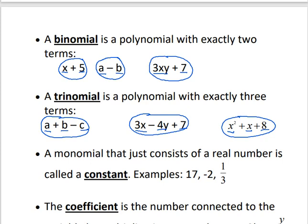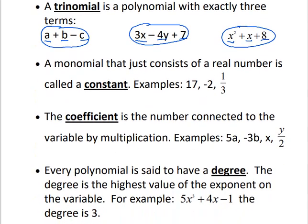A monomial that consists of a real number is called a constant. If we have only numbers and no letters, those are called constants. Another word for letters is a variable. If something is constant, it stays the same — 17 is always going to be 17, negative 2 is always going to be negative 2. But letters like x, y, a, or b are called variables because x could represent 5, or 1, or any number. What those letters represent varies — it changes — so that's why they're called variables.